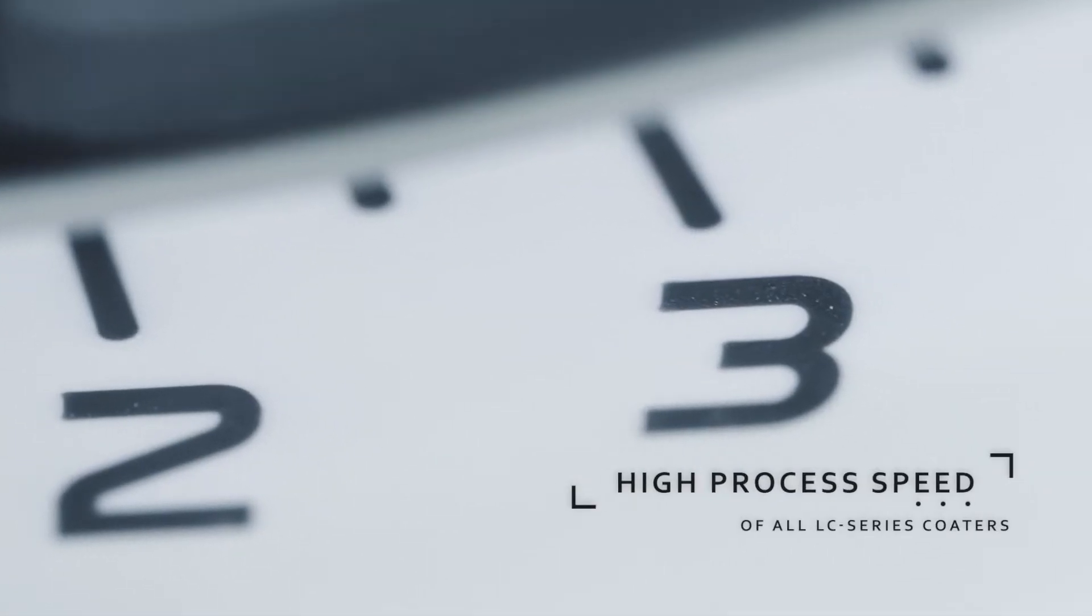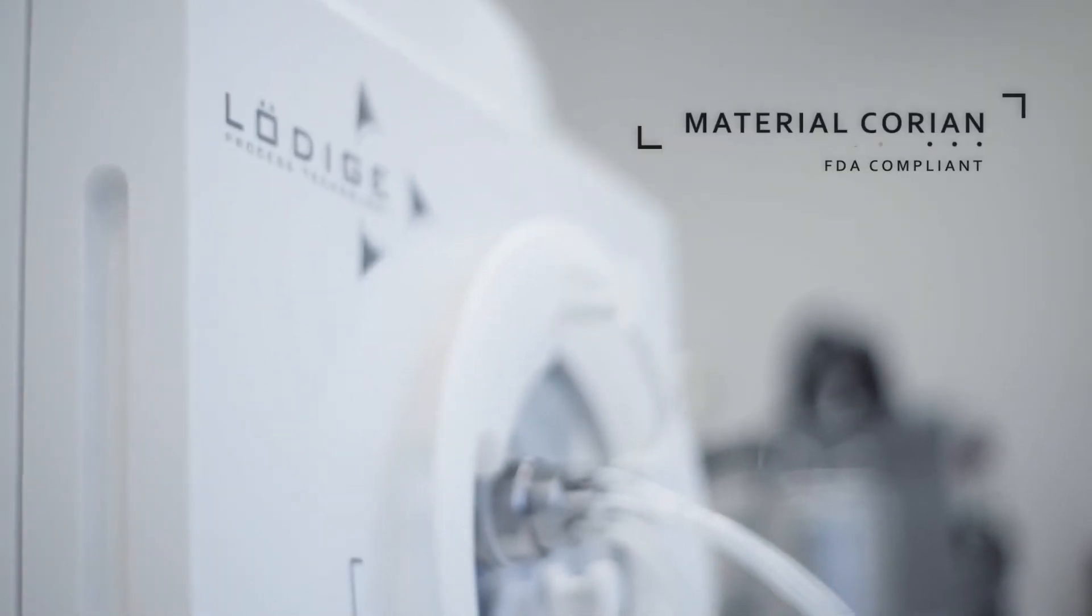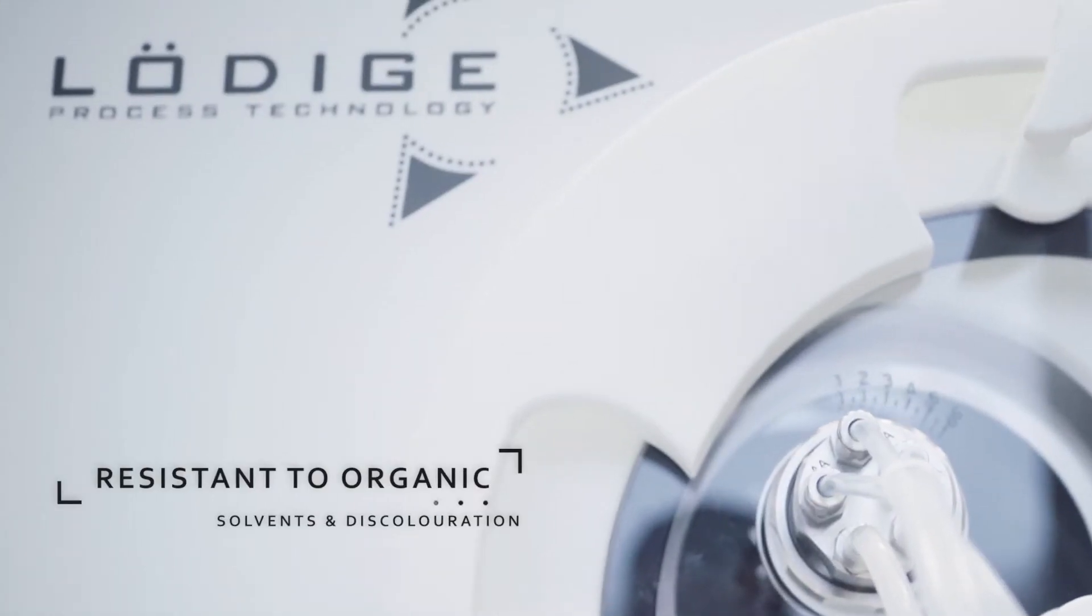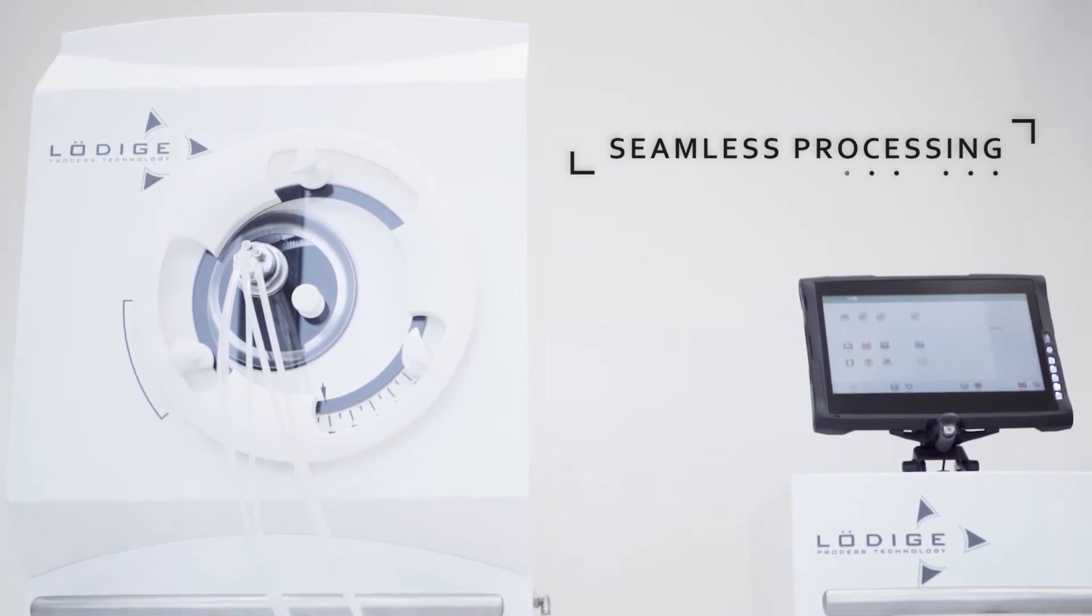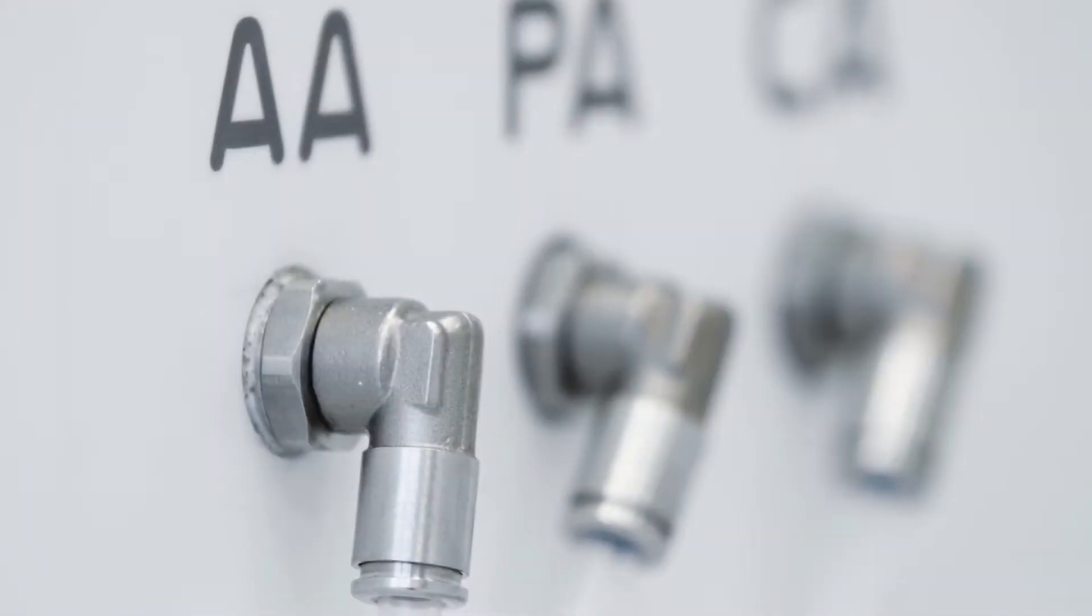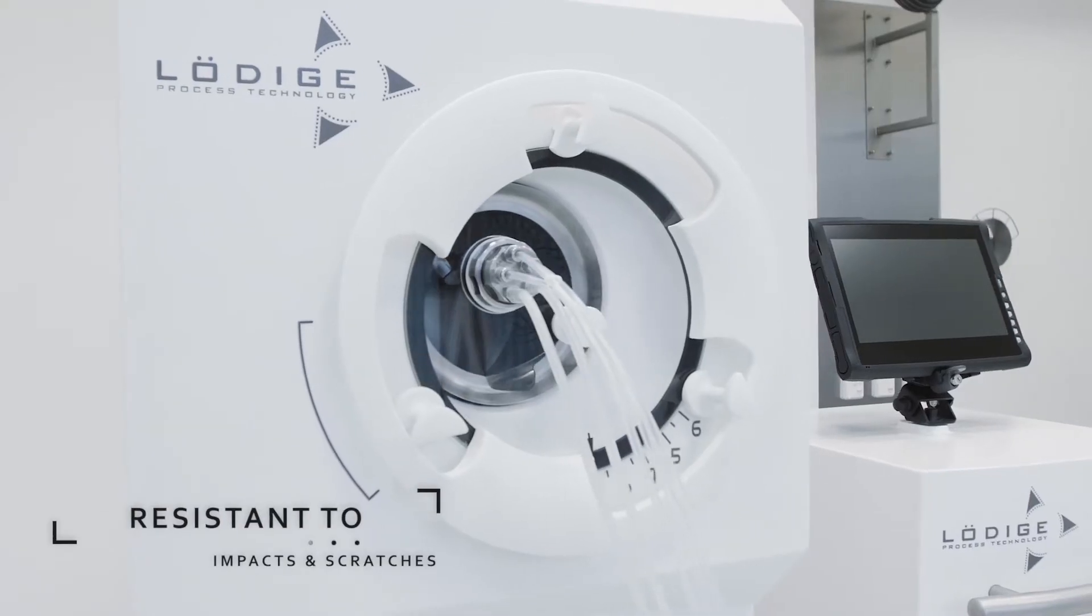This lab coder combines a modern design with great functionality. This starts with the selection of Corian as an exterior material. Corian is a highly resistant and durable material, which is now being used for the first time in pharmaceutical machine applications on this machine.